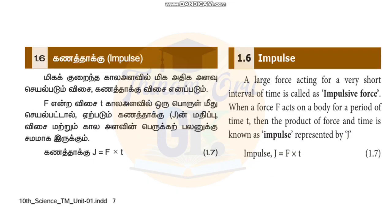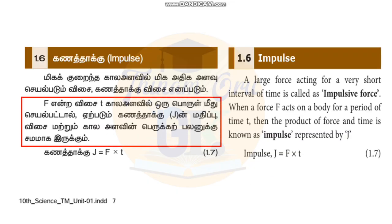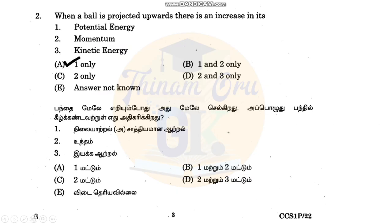We have seen this in the 10th science book. So if F is T, we can do a little bit more than T. However, this is the impulsive force — it represents J. J is equal to F into T. This is the impulsive force formula.